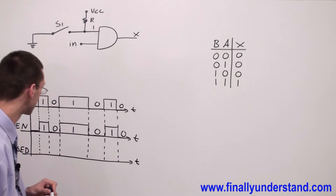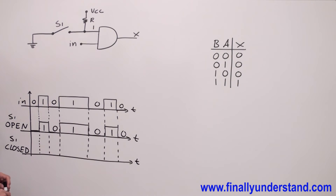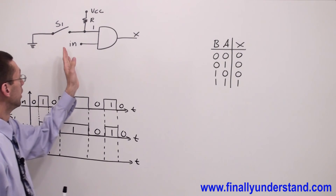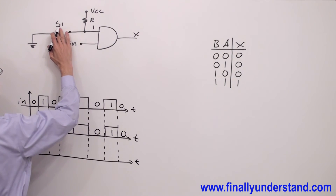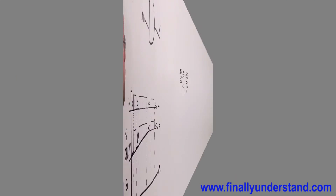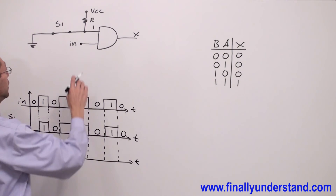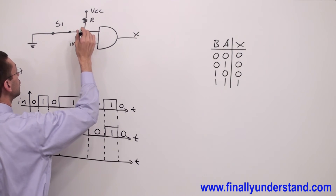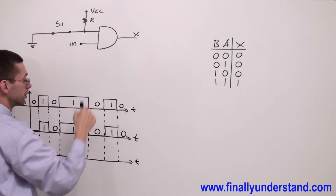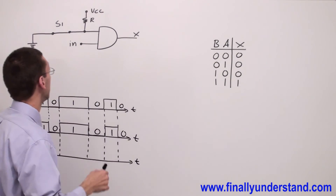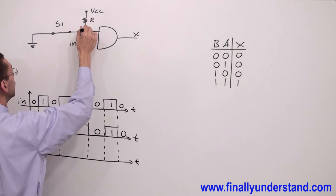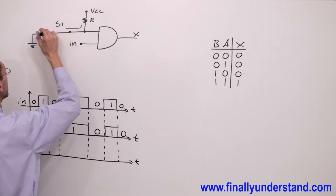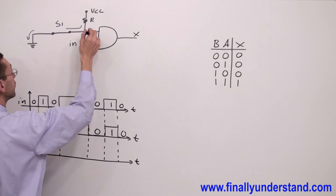When the switch is open, the output waveform is identical to the input waveform — you simply pass the input signal to the output. Now let's see what happens when you close switch S1. If you close switch S1, the current is not going to bother going into the gate because the gate has some resistance, and current always looks for the easiest path to ground.